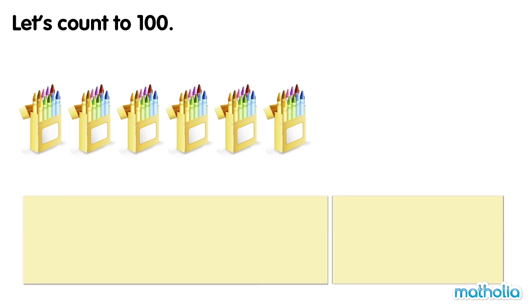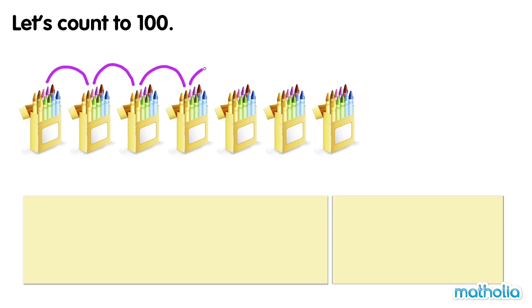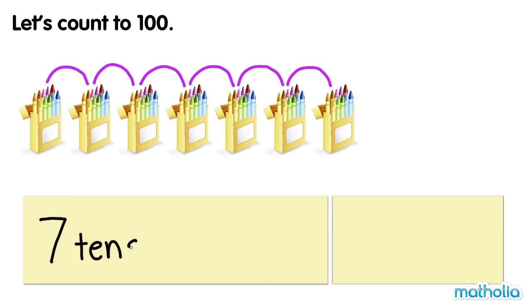There are 7 boxes of crayons. How many crayons are there? 10, 20, 30, 40, 50, 60, 70. There are 70 crayons. 7 tens equals 70.